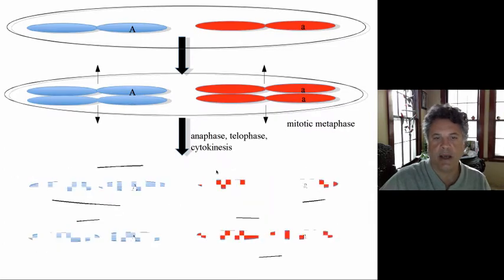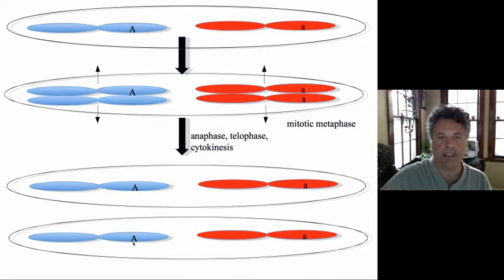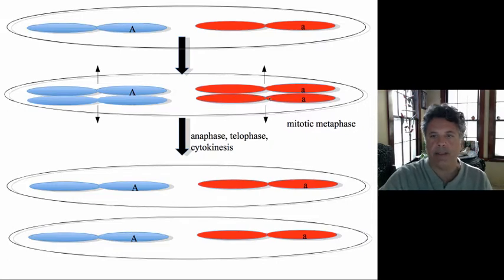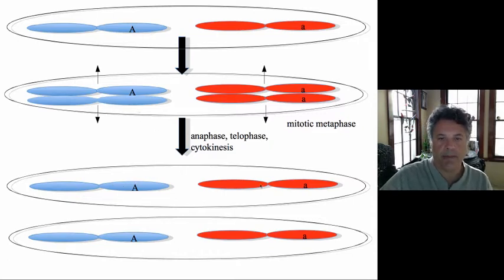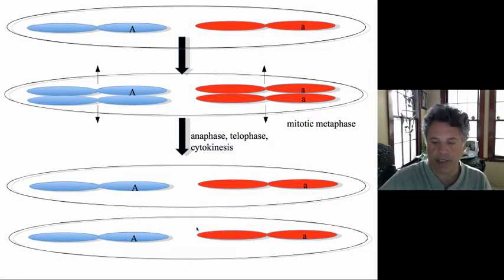Mitosis results in two cells. One cell inherits the top chromosome and the top chromosome here — that's the top cell at the end of mitosis. The bottom cell inherits the bottom sister chromatid and this bottom sister chromatid. So we get two cells, each of which are still heterozygous: big A, little a. Barring mutation, mitosis produces two daughter cells that are genetically identical to the parental cell.